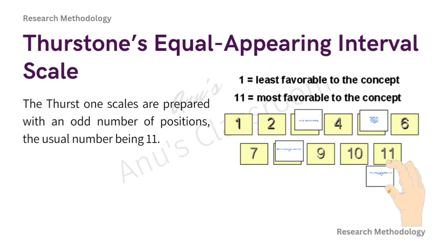The next is Thurstone's equal appearing interval scale. In this scale, we are interested in scaling the respondents and not the statements. The first step in scale construction is to scale attitude statements along an attitude continuum, done by asking judges to evaluate items. Scales are prepared with an odd number of positions, usually 11. The drawbacks include the time required being fairly high, the influence of judges' own attitudes on scale positions, and no information on the degree or intensity of agreement. It measures attitudes from 1 (least favorable) to 11 (most favorable).